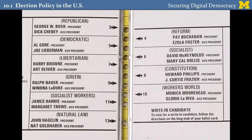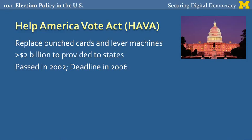The most significant reform ever to take place in federal election policy in the US came in the wake of the 2000 presidential election and was specifically caused by the recount debacle in Florida over problems like the butterfly punch card ballots we talked about in earlier lectures. After the embarrassment and debacle in Florida, Congress responded two years later by passing the Help America Vote Act of 2002, which is widely known as HAVA. HAVA was a major piece of reform. It mandated that states would replace their punch cards and lever machines and provided more than $2 billion in federal money to get them to do it. Although it was passed in 2002, the deadline for implementing these reforms was fairly quick — 2006 — so states had only about four years to upgrade their voting equipment.